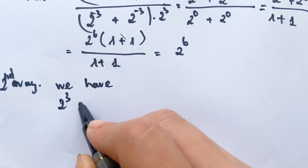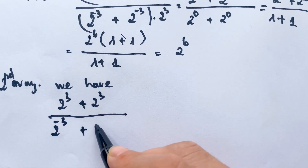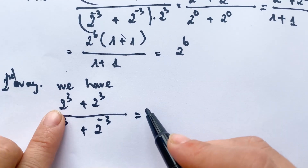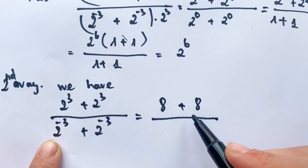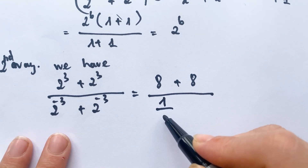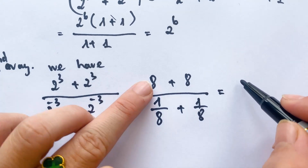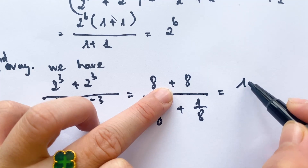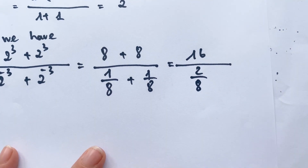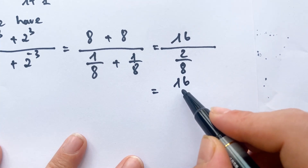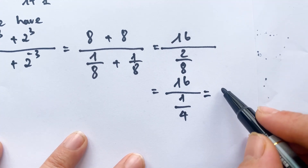For the second method: the expression equals one plus two to the power three over one plus two to the minus three. Since two to the power three equals eight, the numerator becomes one plus eight equals nine — wait, the numerator is sixteen and we have two over eight, so the denominator is one quarter. Therefore one plus sixteen times four equals sixty-four.